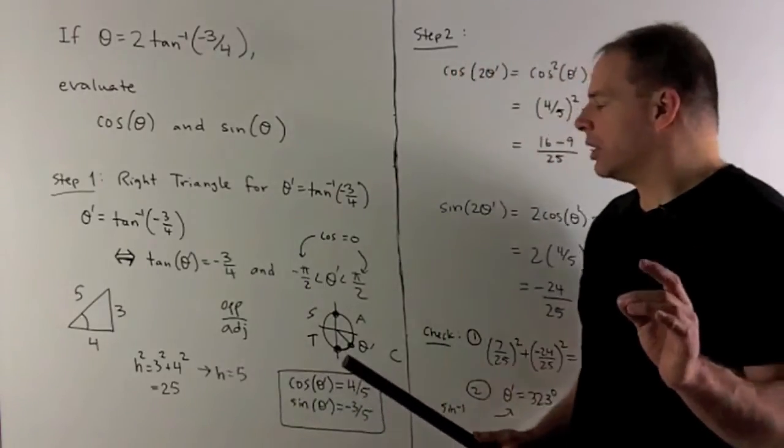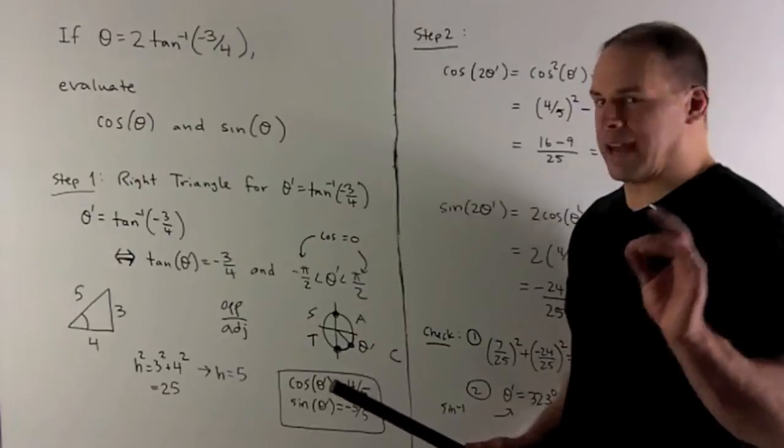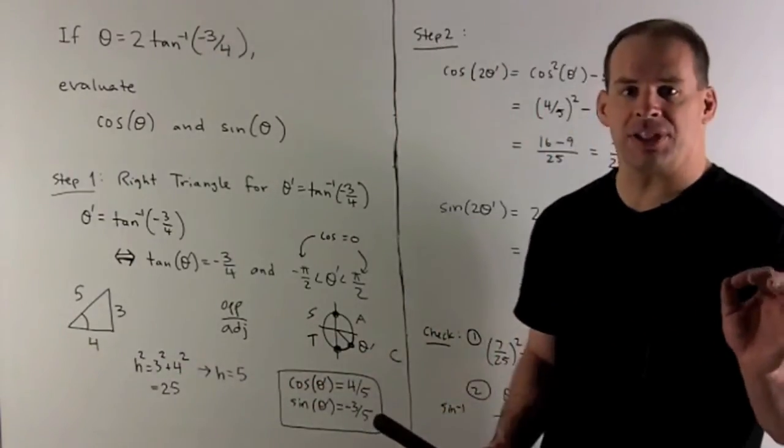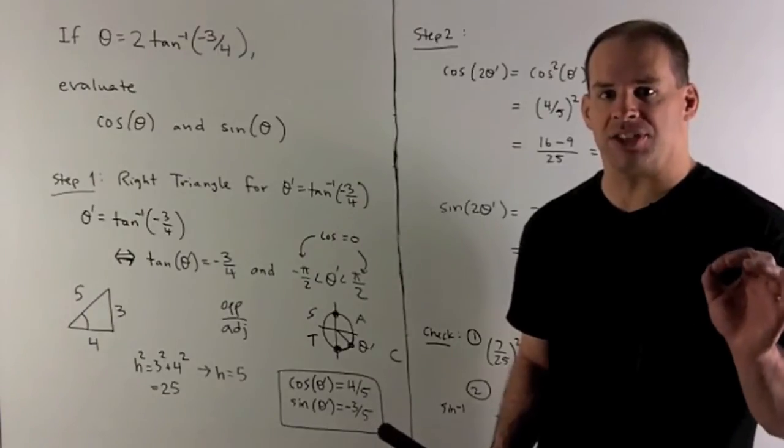Then, what do we have? So the cosine is going to be an absolute value four-fifths. The sine is going to be three-fifths, an absolute value. Then I just need to know how to put the signs in.